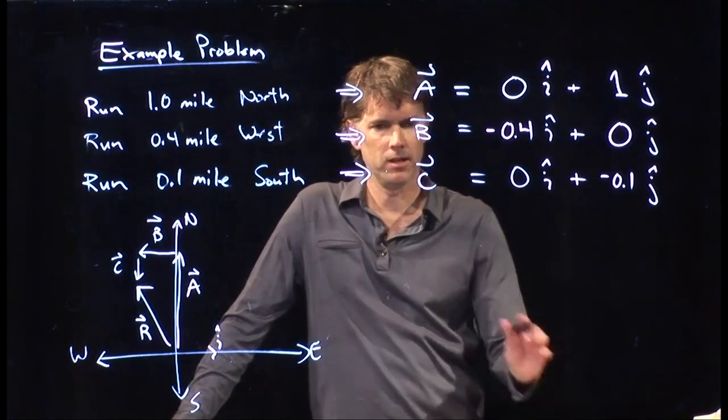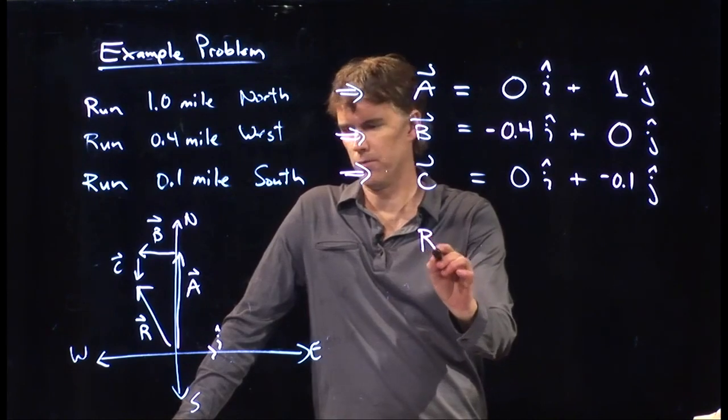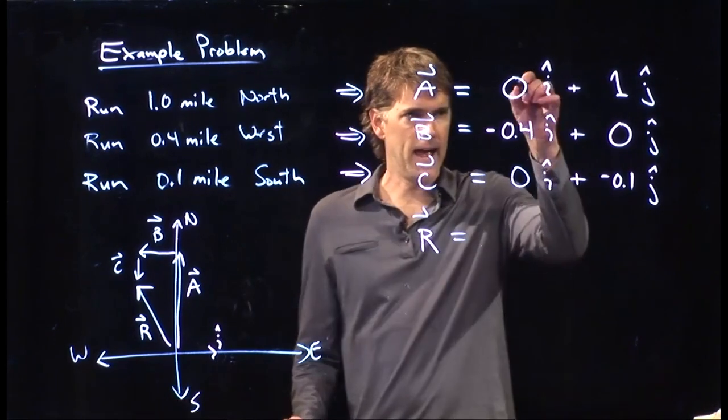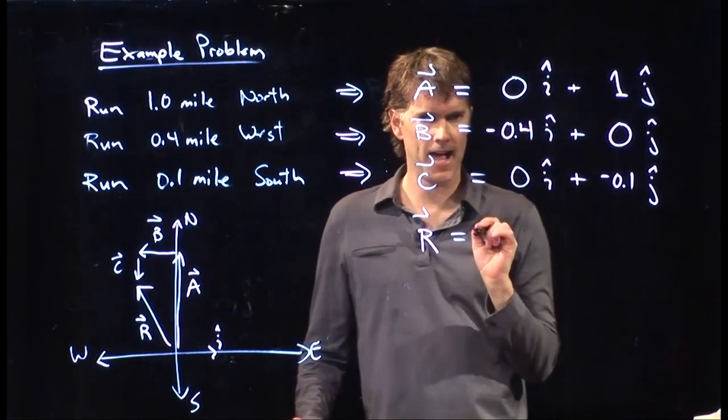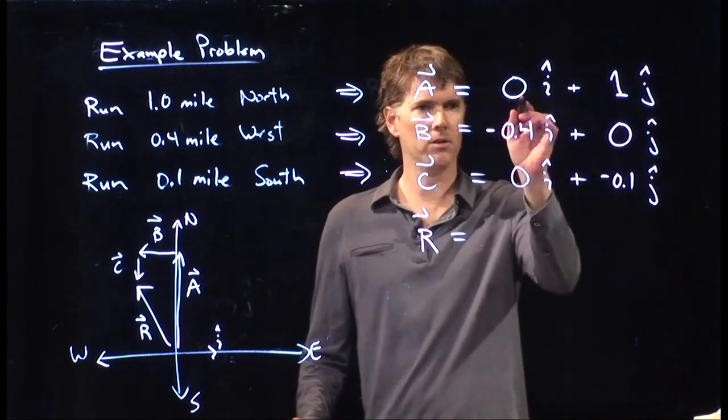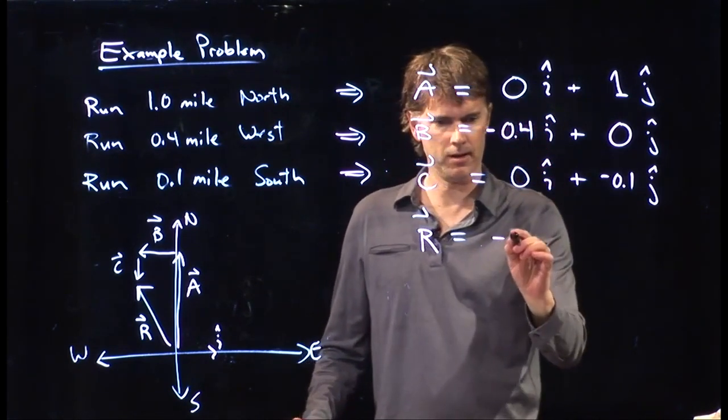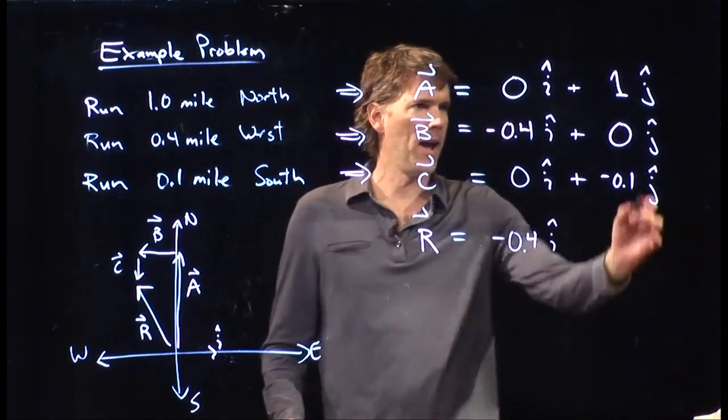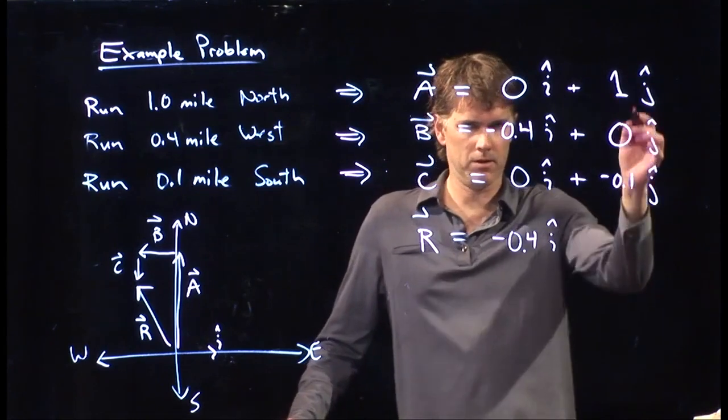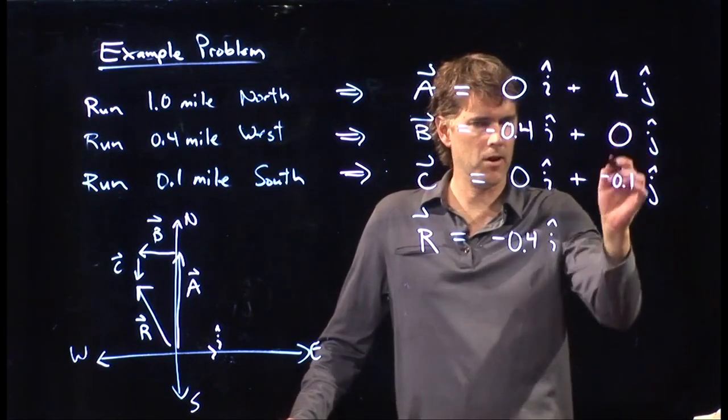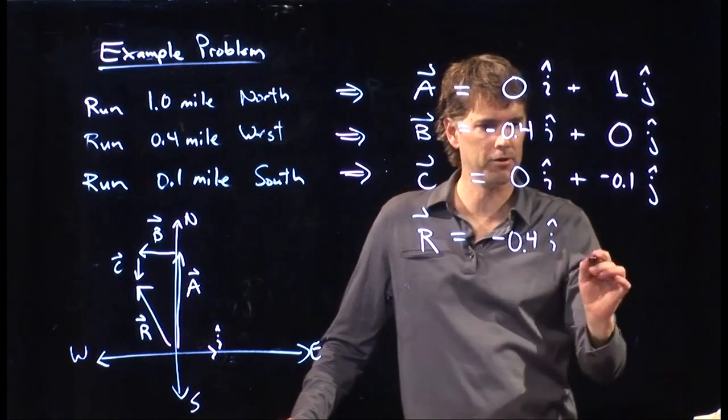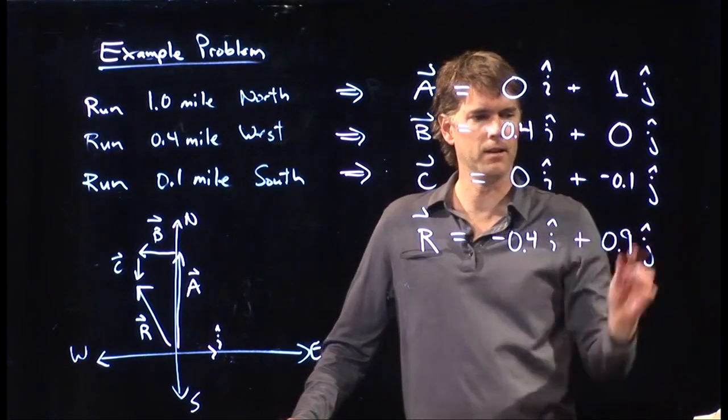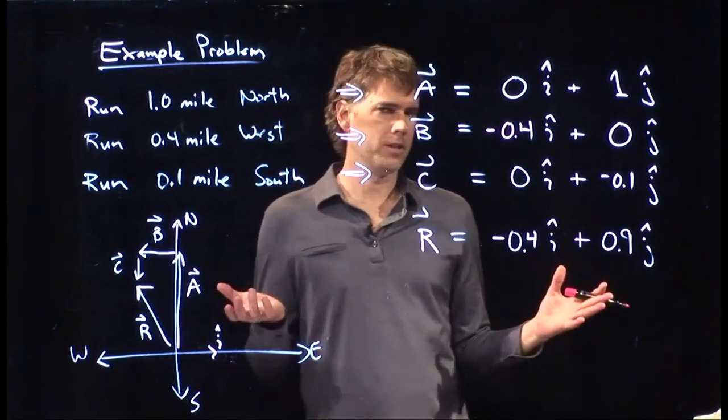And now it's nearly trivial to write the resultant vector. How do I do it? I add these up. All the i-hats I add up. I add 0 to negative 0.4 to 0. And of course, I get negative 0.4. And now I add up these three. I have 1 plus 0 plus negative 0.1. And that gives me a positive 0.9 j-hat.